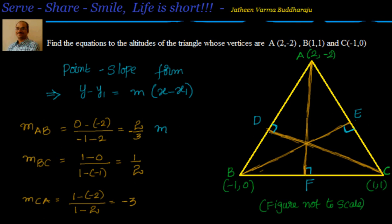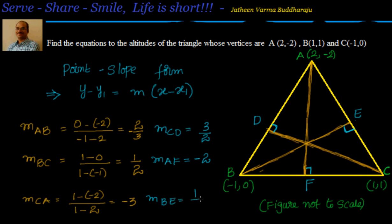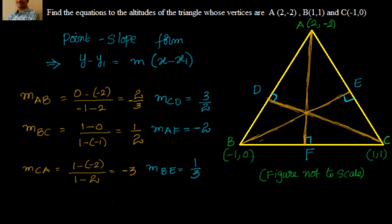For side AB, the altitude is CD. The slope of CD, being perpendicular to AB, is the negative reciprocal of -2/3, which gives 3/2. For side BC, the altitude from A is AF, so the slope of AF equals -2. For side CA, the altitude is BE, so the slope of BE equals 1/3. We now have the slopes of all three altitudes.